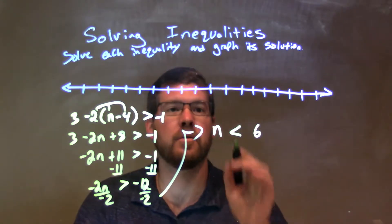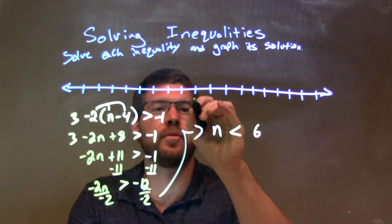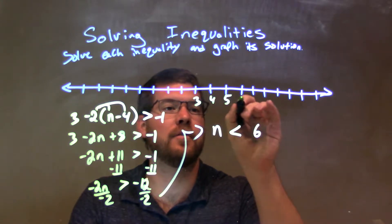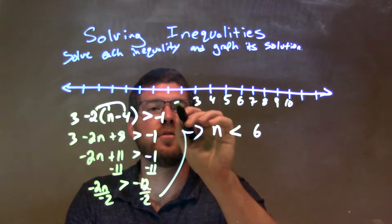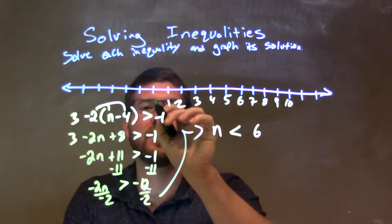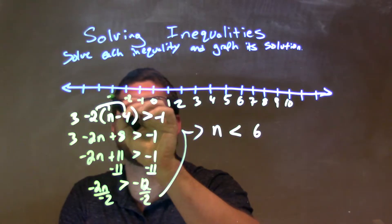Okay, so now let's graph that. Let's put 3 right here. 3, 4, 5, 6, 7, 8, 9, 10, 2, not negative, yeah, 1, 0, negative 1, negative 2, and negative 3. Okay?